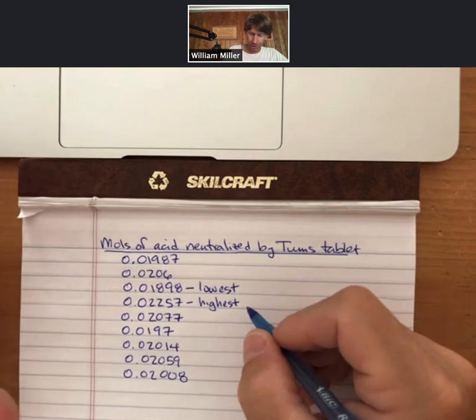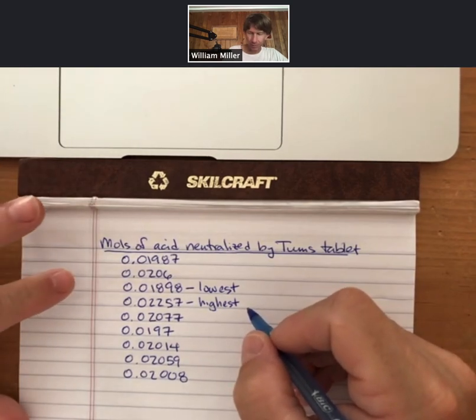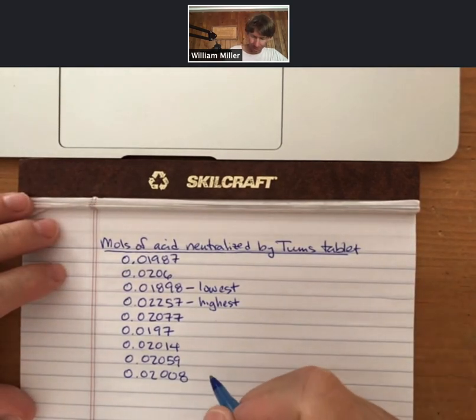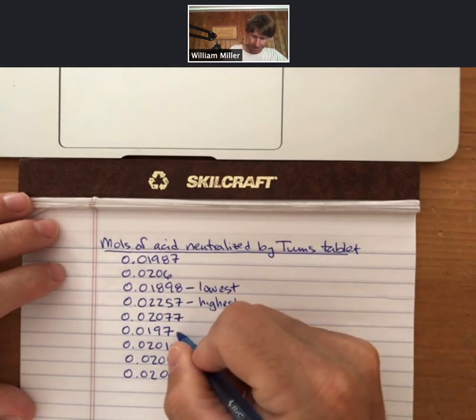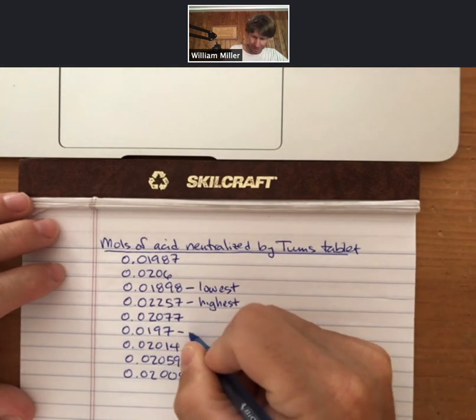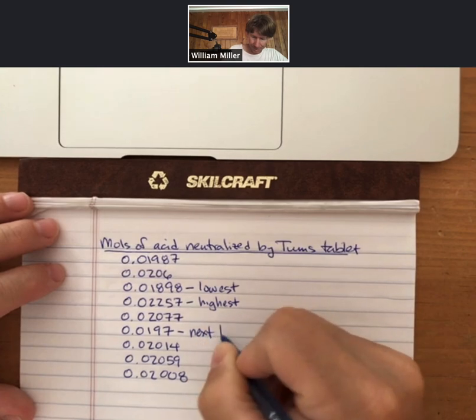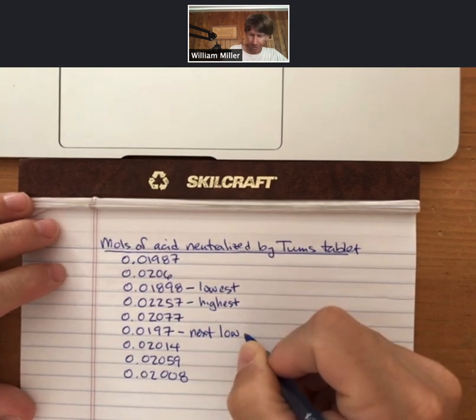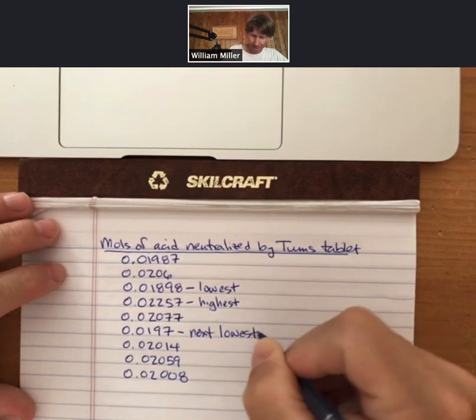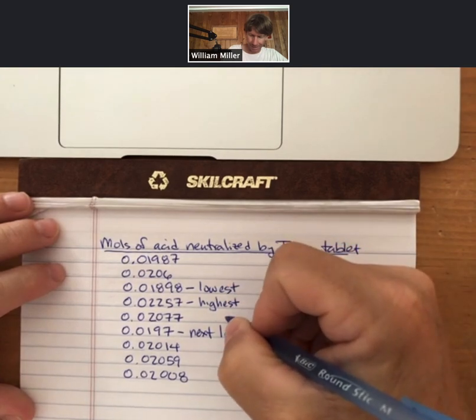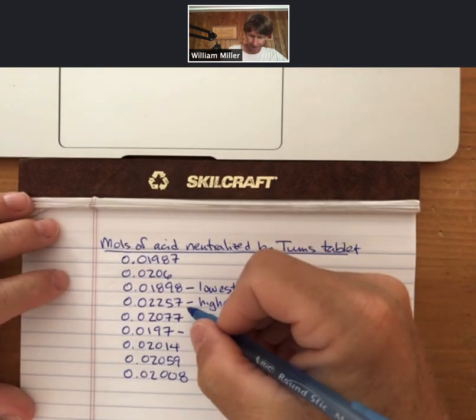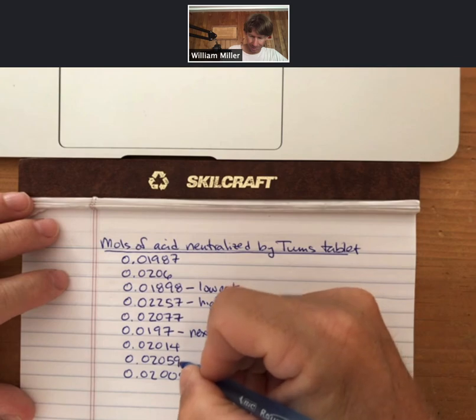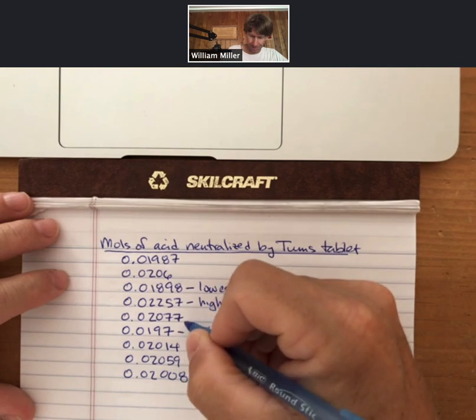We're not sure yet. We have to find the next lowest, which I guess is right here, 0.0197, and the next highest from the highest, 0.02077.